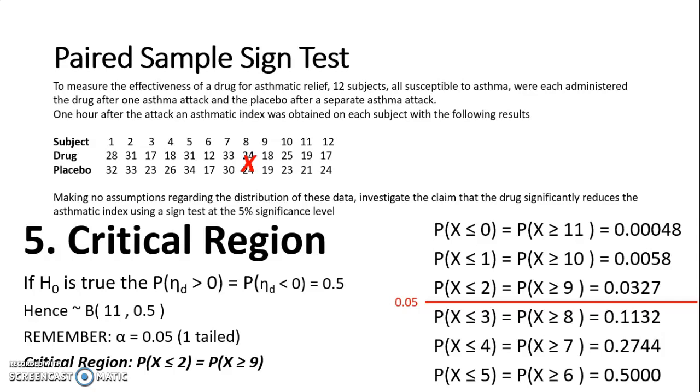Because those three probabilities below that red line, or sorry, above that red line are less than 0.05.